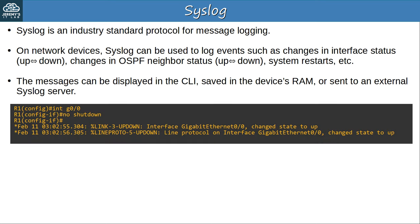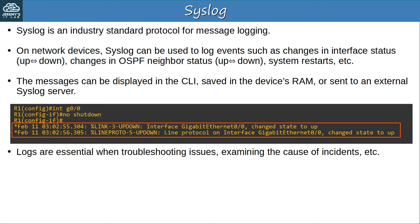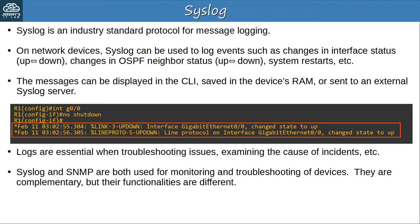I'm sure you've seen these messages as you configure devices in Packet Tracer. For example, I used NO SHUTDOWN to enable a router interface. Notice that two syslog messages are displayed, indicating that the interface state has changed to UP. Logs are essential when troubleshooting issues, examining the cause of incidents, etc. Syslog and SNMP are both used for monitoring and troubleshooting devices — they are complementary to each other, but their functionalities are quite different.